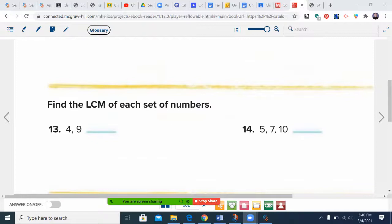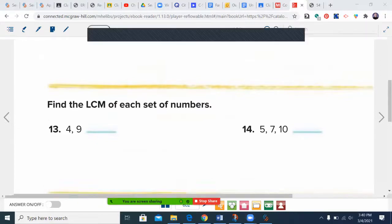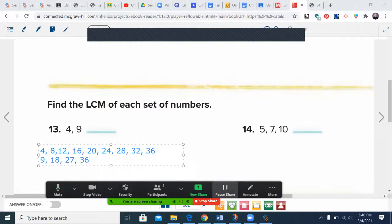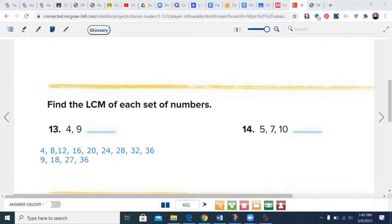Least common multiple. For number 4, my multiples of 4: 4, 8, 12, 16, 20, 24, 28, 32, 36. Now 9 is going to be 9 times 1, 9 times 2, 9 times 3, 9 times 4, and immediately I can see I have a common number: 36. That's the only common number, so my least common multiple is 36.